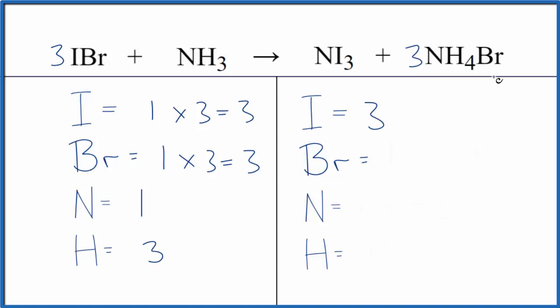So again, the three goes to everything here. One times three, we get three bromines. For nitrogens, we have the one here plus three times the one, three of those. That gives us four hydrogens. Three times four, that gives us 12.